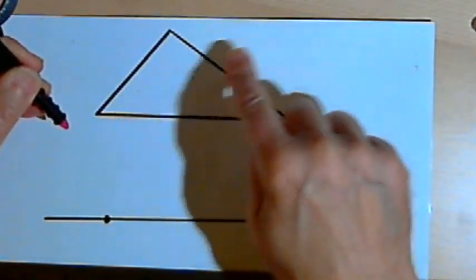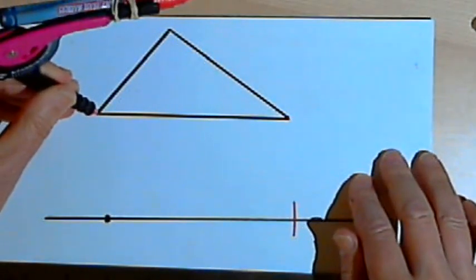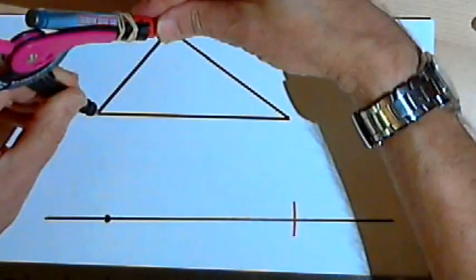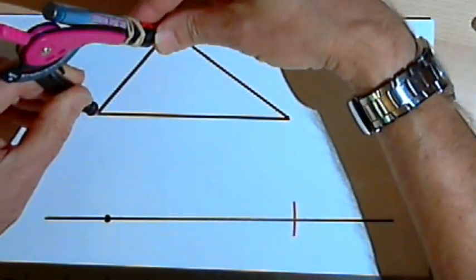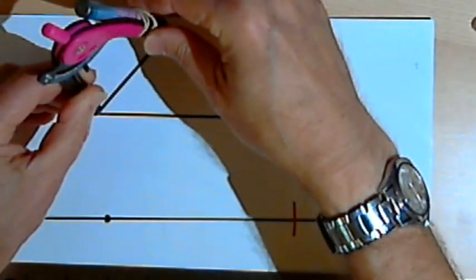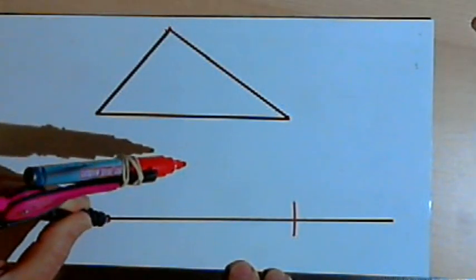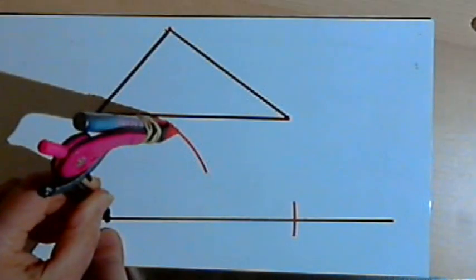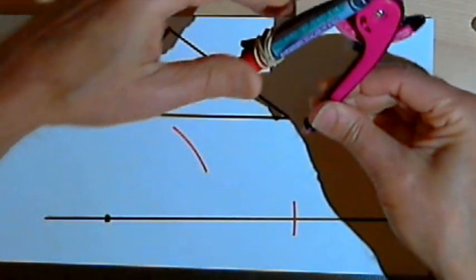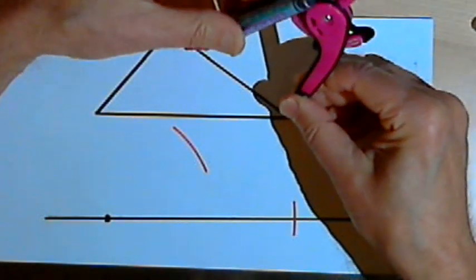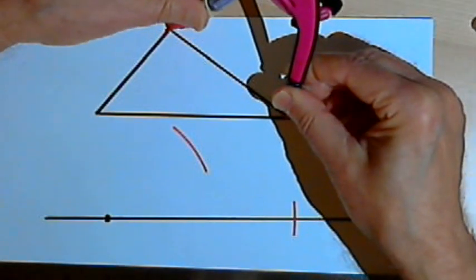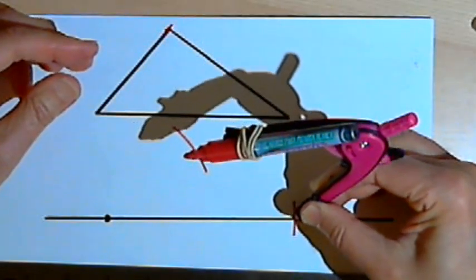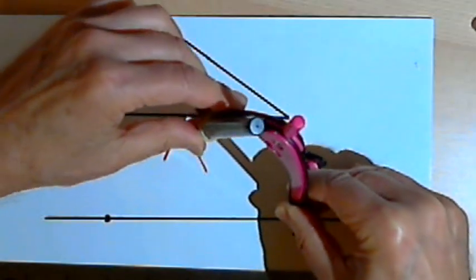I want to copy one of the two remaining sides, so I'll set the point of the compass onto a vertex — one of the base vertices of my triangle — and set the compass equal to the distance from that vertex to the vertex at the top of the triangle. Now I'll copy that distance from the end point of the line segment. And I'm going to do the same thing for the other side of the triangle. I'll set my compass point at a vertex of the triangle, set the compass equal to that side, and copy that distance onto my new triangle.